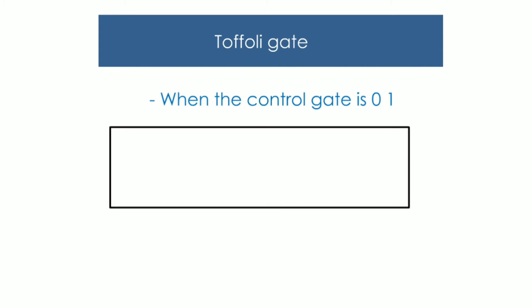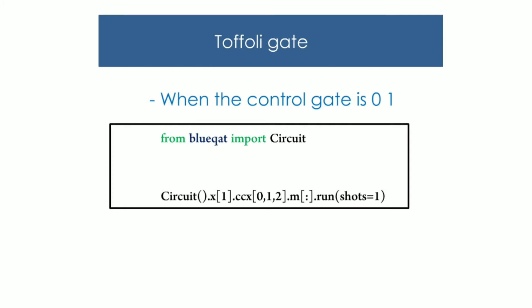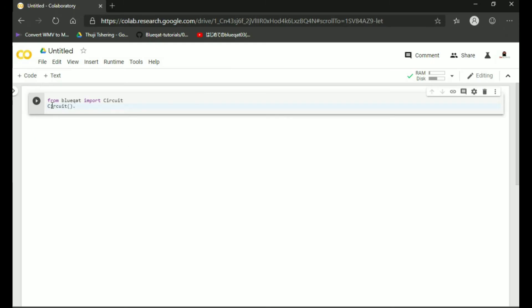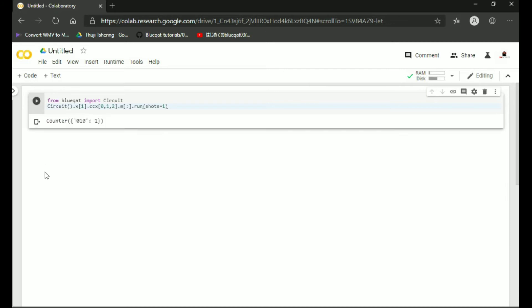Now let us see what the output will be if the first control gate input is 0 and the second control gate input is 1. Type the code shown in Google Colab — here the X gate will make the second control gate input as one. Looking at the Toffoli gate circuit: if we put the first control gate input as 0 and the second as 1, we get the output as 010 if the target gate is 0, and 011 if the target gate is 1. Let us try it — here we put the target gate input as 0, click play, and the output comes as 010. The target gate input doesn't change in the output.